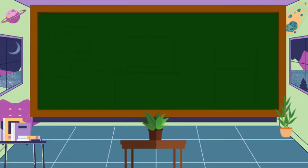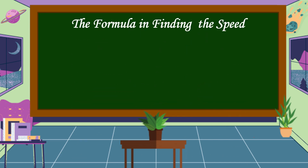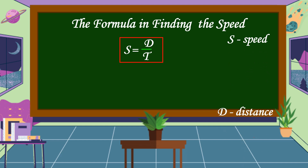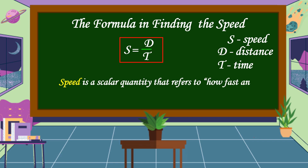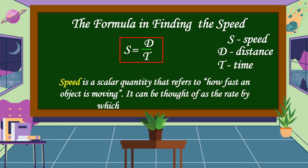What is the formula in finding the speed? The formula in finding the speed is S is equal to D divided by T, where S is the speed, D is the distance, and T is the time. Speed is a scalar quantity that refers to how fast an object is moving. It can be thought of as the rate by which an object covers distance.